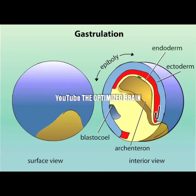The endoderm at the roof of the cavity originated from the outside of the embryo. The cavity is continuous with the outside via the blastopore, which eventually becomes the anus of the animal.